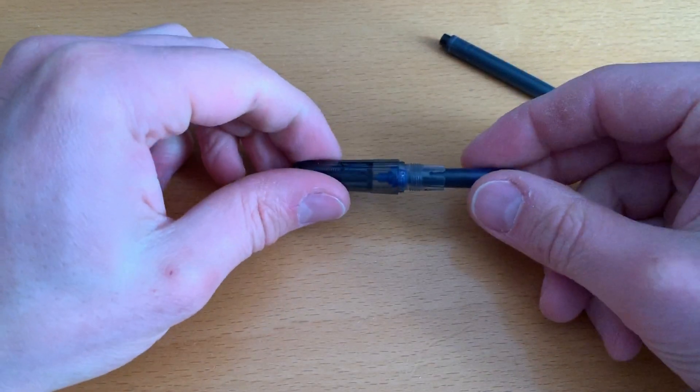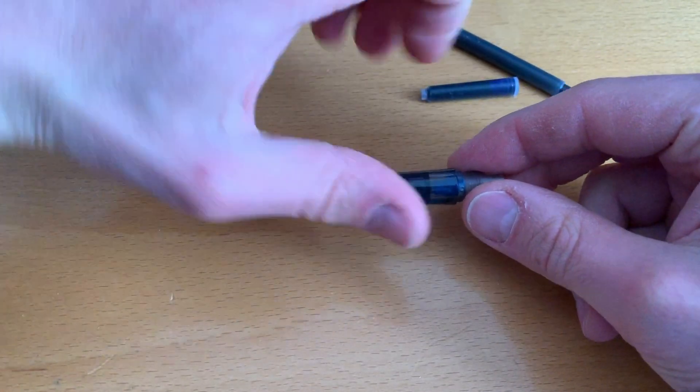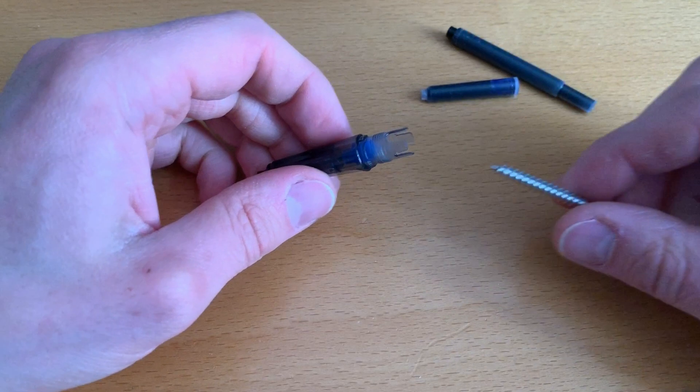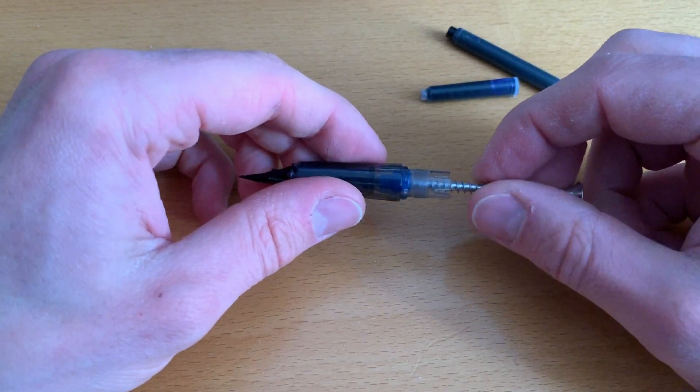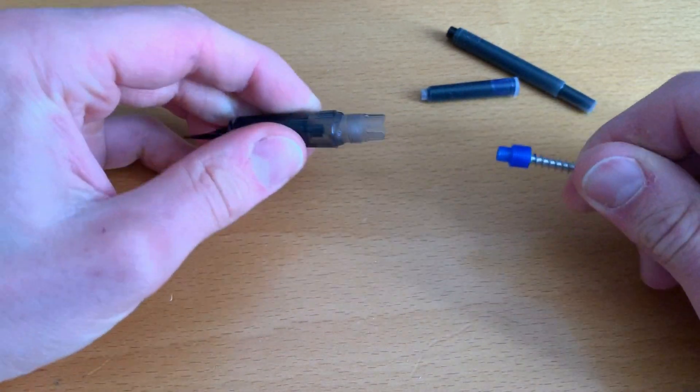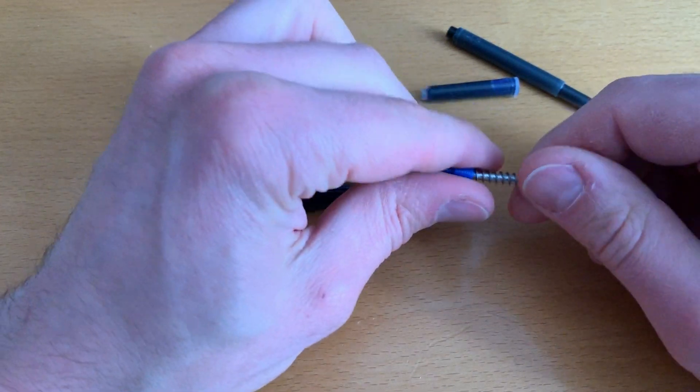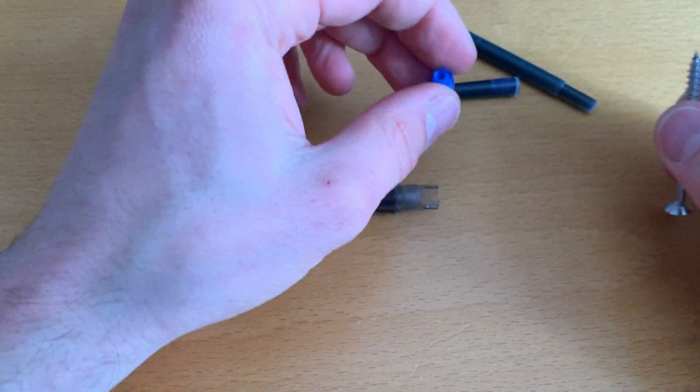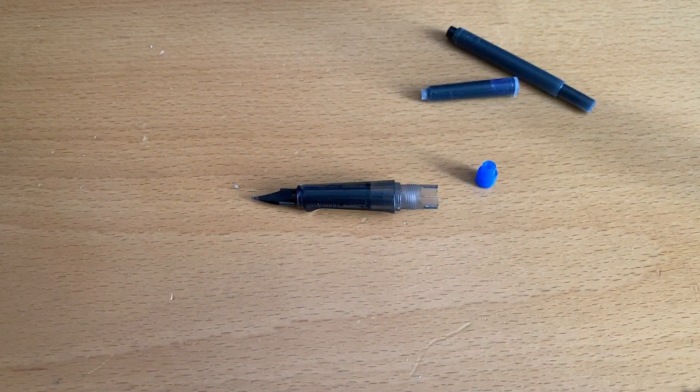Therefore, I came up with the idea to print an adapter for it, which enables me to put the small cartridge into the other fountain pen. One of the drawbacks is that they get stuck in there, but you can take a wood screw and just pop it out again.